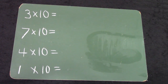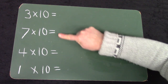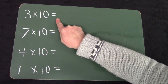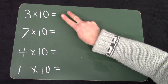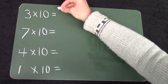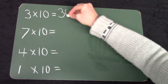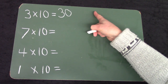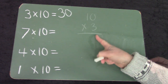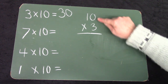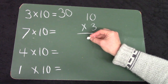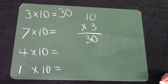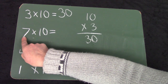Let's take a look at some of these equal group questions. If there are three groups of ten, you would count by ten three times: ten, twenty, thirty. Another way that we could write this problem is vertically — three groups of ten would be thirty.